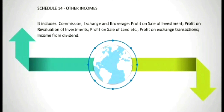In Schedule 14, Other Income, it includes commission, exchange and brokerage, profit on sale of investment, profit on revaluation of investment, profit on sale of land, profit on exchange transaction, and income from dividend. Other income of the banking company is to be mentioned in Schedule 14.